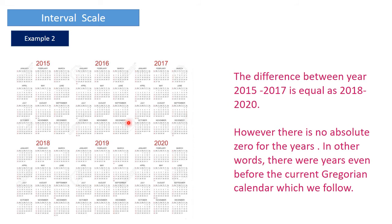Another example of interval scale is calendar years. The difference between 2015 and 2017 is equal to the difference between 2018 and 2020. However, there is no absolute zero for these years — there were years even before the current Gregorian calendar. So even though the difference between two groups can be measured and is meaningful, there is no absolute zero, and calculating the ratio between two values is meaningless.